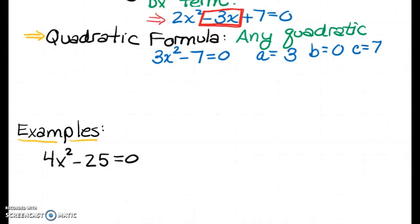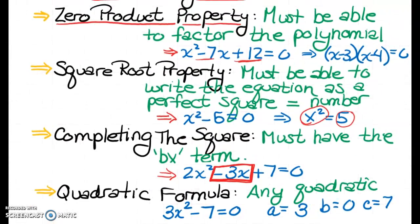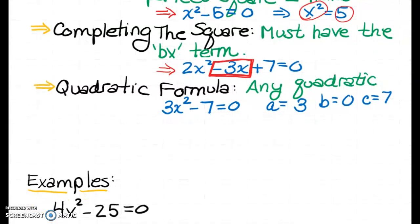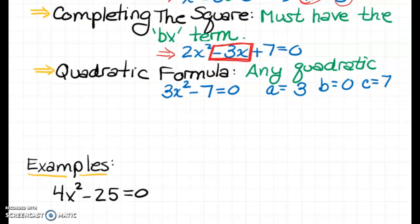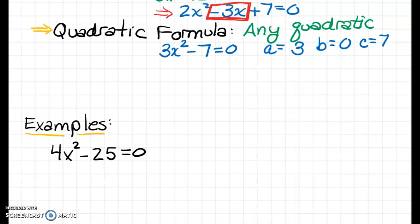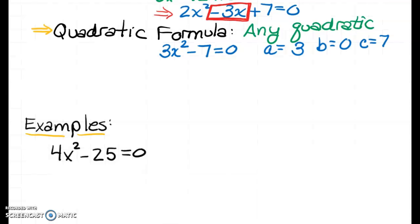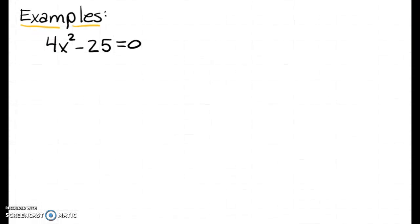The quadratic formula can be used for any quadratic — there are no limitations. The first three methods all have limitations: zero product property requires the equation to be factorable, square root property requires a perfect square equal to a number, and completing the square requires the bx term. You might wonder why use any other method if the quadratic formula always works — well, it isn't always the fastest. I'll go through examples using each method.